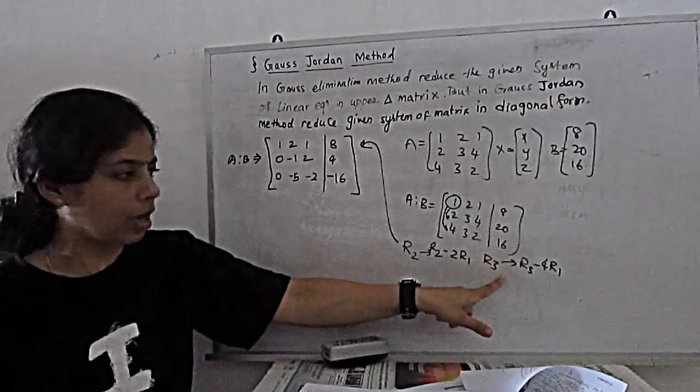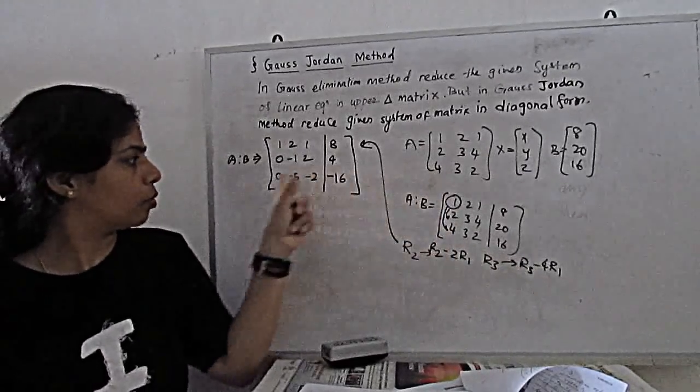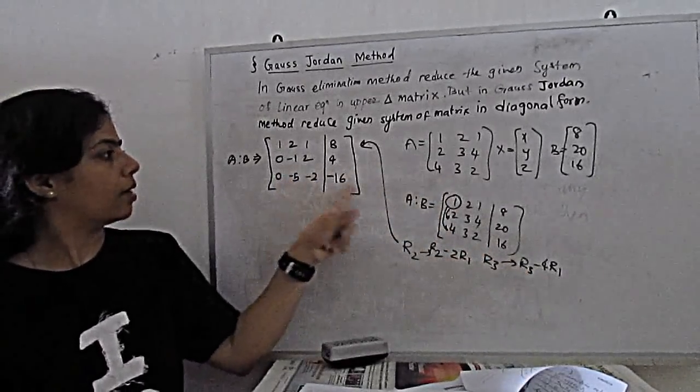Similarly, for R3, we have to apply this operation. 4 minus 4 is 0. This minus is 5 and 2.